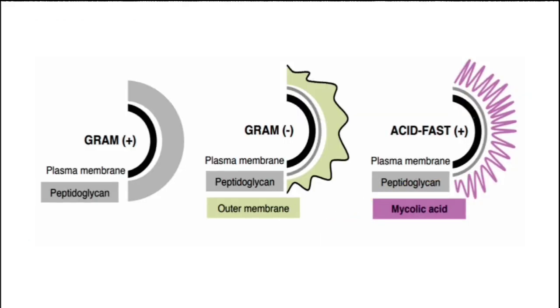On the right side is a real picture — you will see the same red colored beaded appearance bacilli on the microscope. You can see that gram positive bacteria have thick peptidoglycan, gram negative have a very thin peptidoglycan layer with lipopolysaccharide, and acid fastness is due to the presence of mycolic acid in the cell wall.